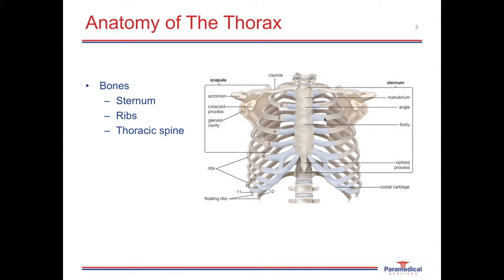We have 12 pairs of ribs, 10 of which are attached to the sternum via cartilages, and then we have two pairs of floating ribs which are pair 11 and 12. All these ribs articulate with the thoracic spine, of which we have 12 thoracic vertebrae. The thoracic spine, the ribs, and the sternum all together encompass the thoracic cavity. Additional bones attached onto the thorax include the clavicle, which articulates with the top of the manubrium and extends to articulate with the scapula.